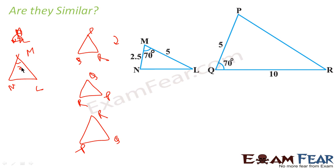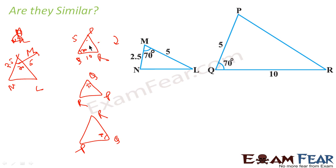M is 70 degrees and Q is 70 degrees. Now if you compare these two triangles, you see that the angles are not the same — this angle is not equal to this angle. Also, this side is 2.5 and this is 5, and this is 5 and this is 10. You compare 2.5 by 5, but this other side x is not known. So we cannot say that they are similar or not.